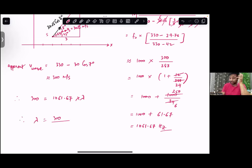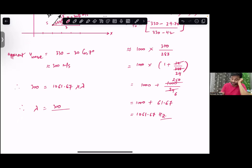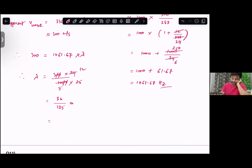Therefore lambda is 300 divided by this. You can also write this in the form 1000 into 25 by 24. When you calculate, this gives approximately 0.283 meters or 28.3 cm.